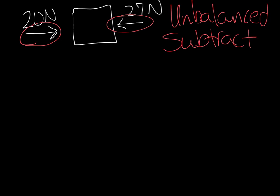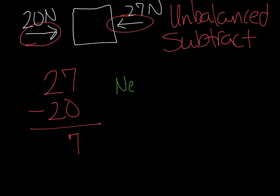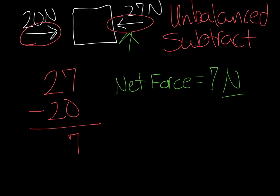Let's do the math. Bigger number on top: 27 minus 20. What did you get? Seven. So in this case, the net force acting on this object equals seven newtons. Do any of these forces win? 27 wins because it's greater. So what direction is it going? It's going to the left. So because of that, this object is going to move to the left.